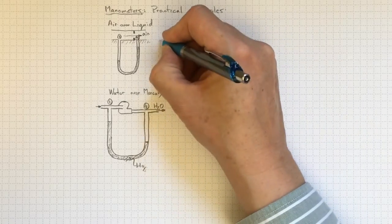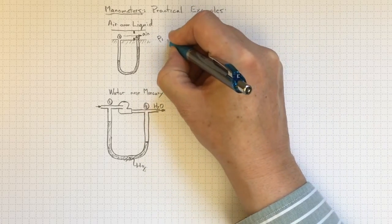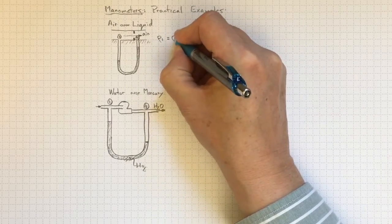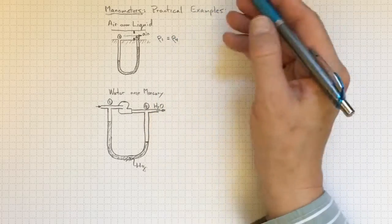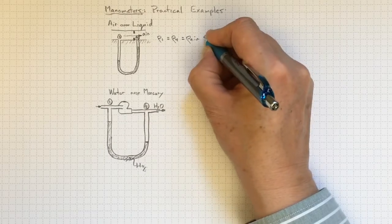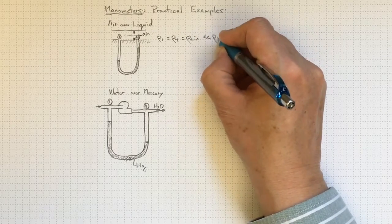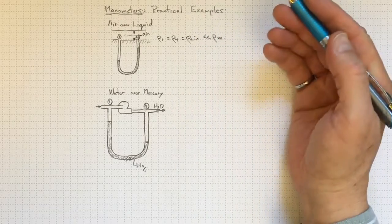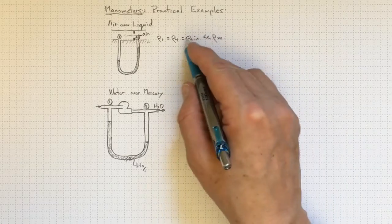If we look at the density at location 1, it's about equal to the density at location 4 because it's both air, and if the air density is much, much less than the density of the manometer fluid, then we can neglect the density of the air.